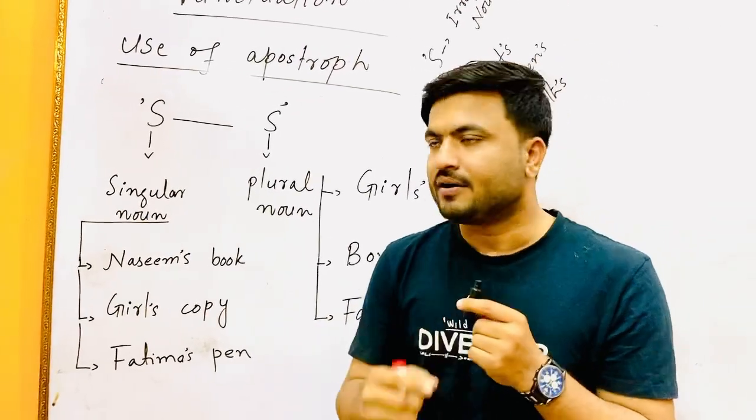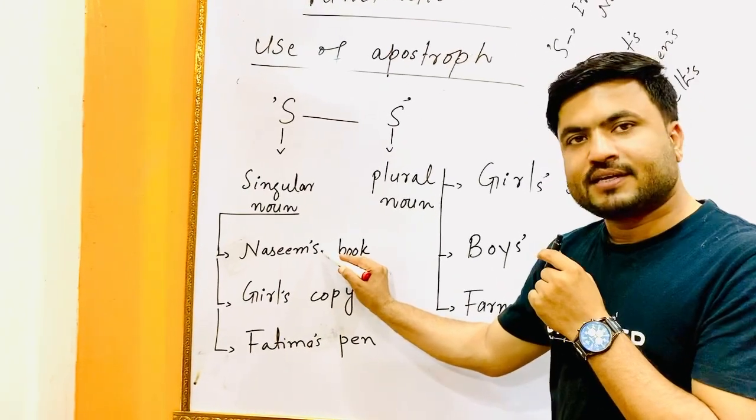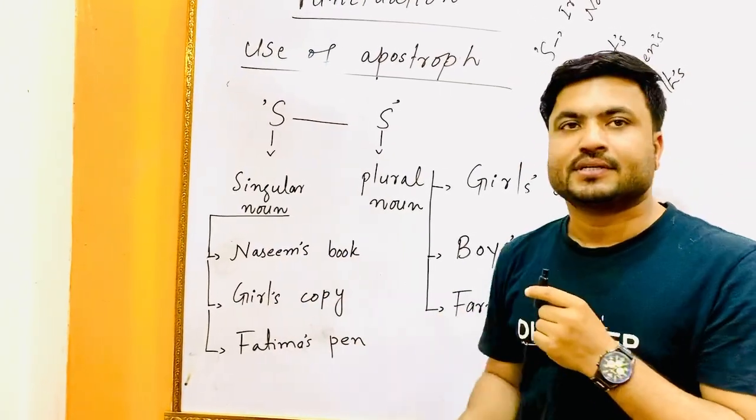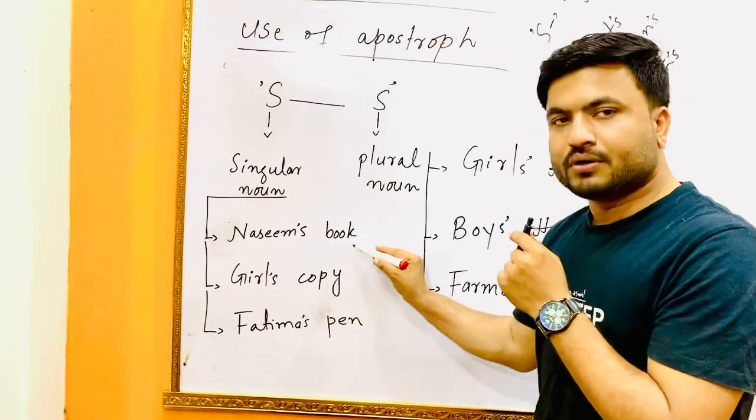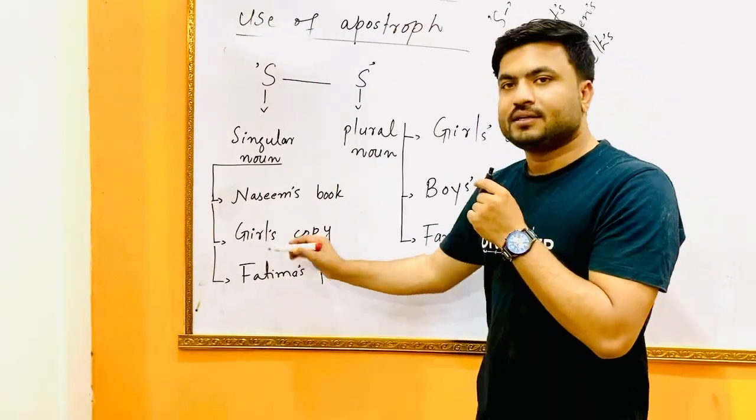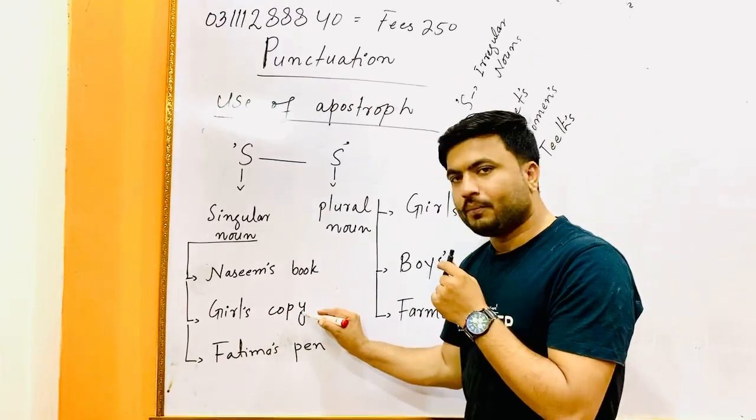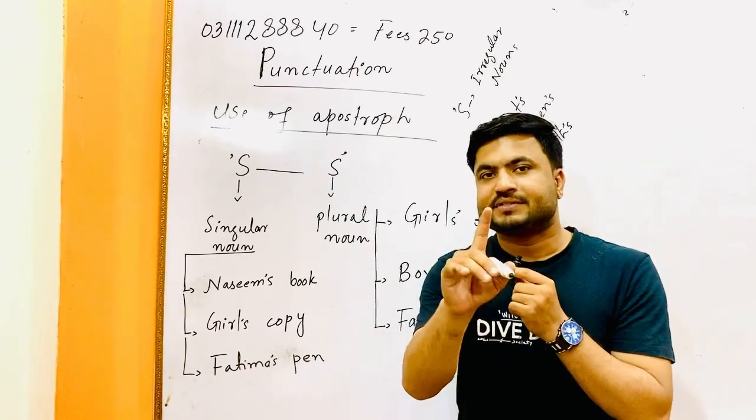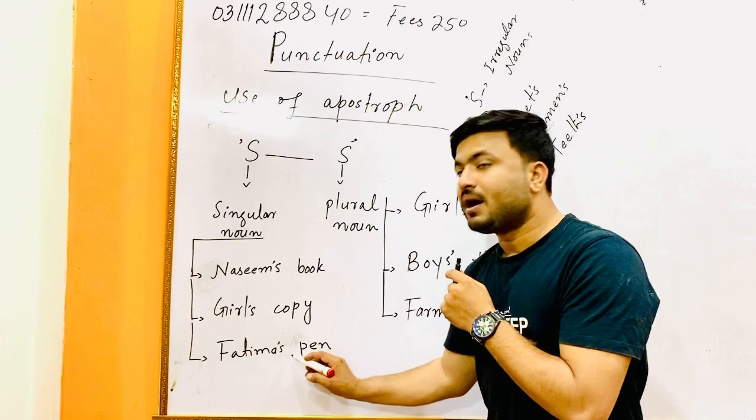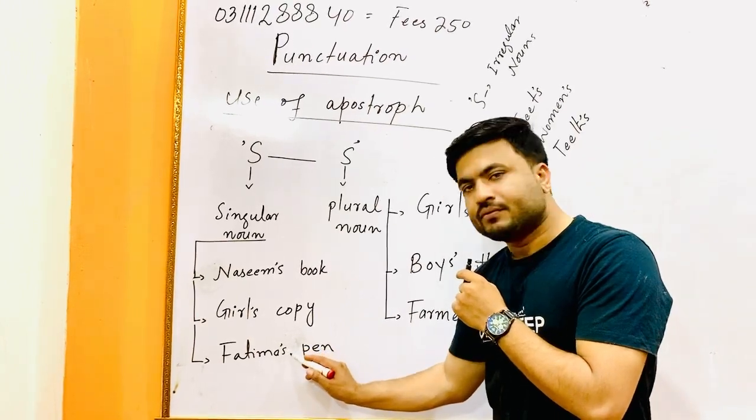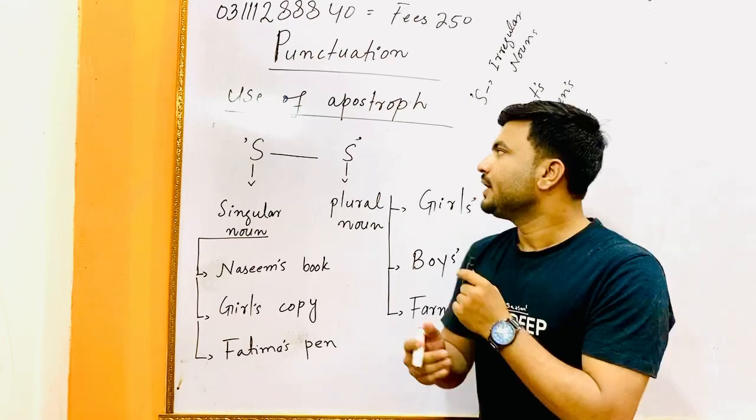Nasim is a singular noun, so we would say Nasim's book. Girl, we consider it a single girl. Girl's copy means it's a copy of a single girl. Fatma - Fatma's pen, apostrophe then we put 's'.